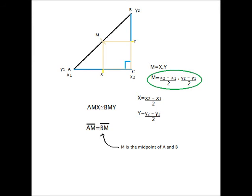The point M has an x value of x and a y value of y, which means that M is x2 minus x1 over 2, y2 minus y1 over 2, which is the midpoint formula. There is your explanation.